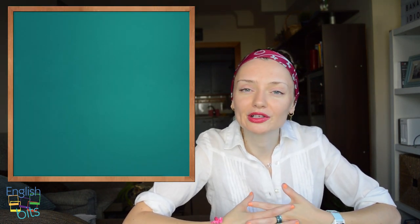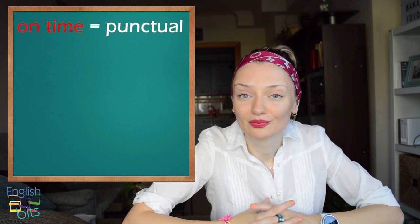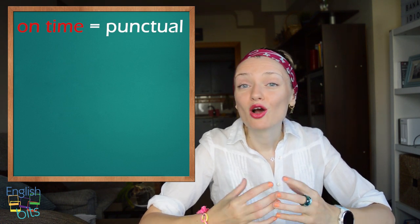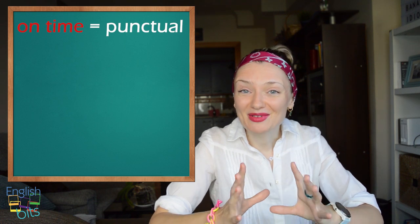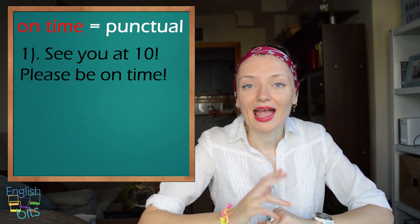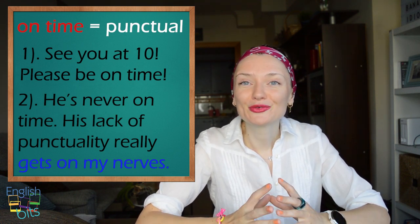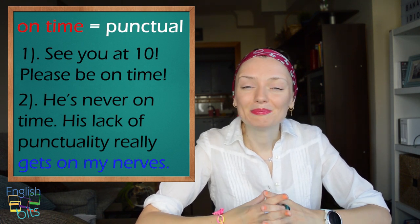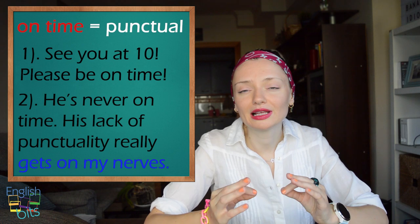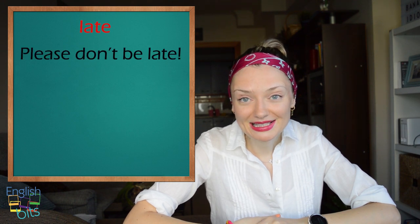Let's start with our first group of words: on time and in time. On time means punctual, not late — something happens at the time which was planned. In castellano sería puntual o clavado. For example: 'See you at 10, please be on time.' And another example: 'He's never on time — his lack of punctuality really gets on my nerves.' The verb to get on somebody's nerves means poner de los nervios. The opposite of on time is late, for example: 'Please don't be late.'